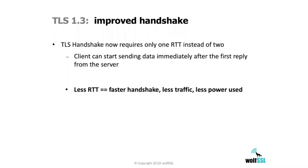The client can start sending encrypted data immediately after the server replies to the first packet. For embedded developers, fewer round-trip times means a faster handshake, but also less traffic — very important if your communication channel is not the traditional internet but a proprietary wireless protocol like LPWAN. It also means less power used during the handshake, which means better energy management from the embedded device.